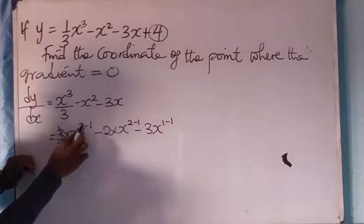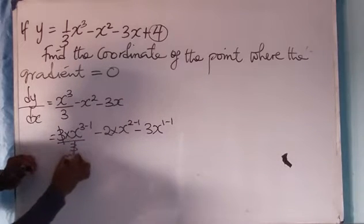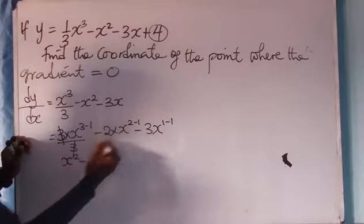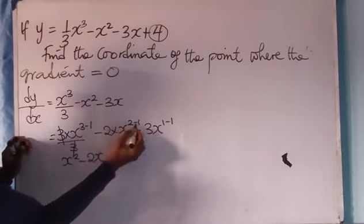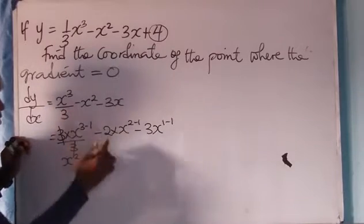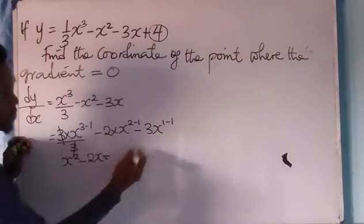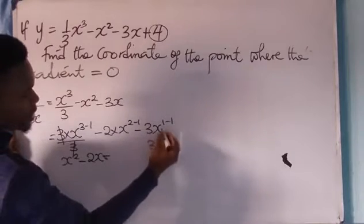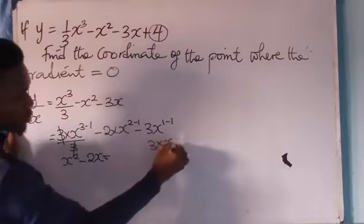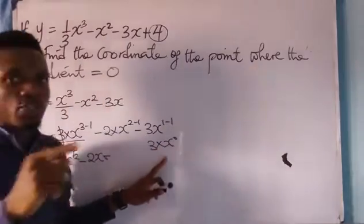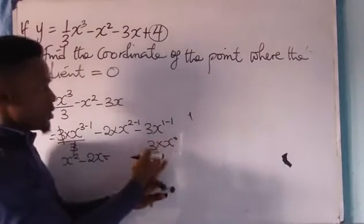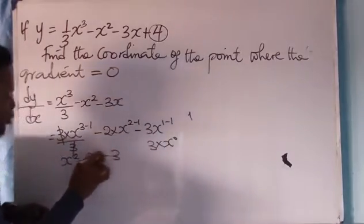So I'm left with x, 3 minus 1 is x raised to 2 minus, now, 2 times x is 2x, then 2 minus 1 is 1. So there is no need for me to write 1, I'll just leave it like this. Then minus, this 3 times 1 minus 1 is 0, becomes x to power 0. But in mathematics, anything that is raised to 0 is the same thing as 1. So 3 times 1 is 3.